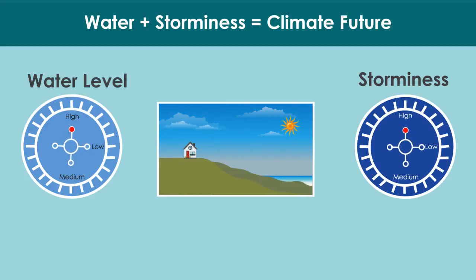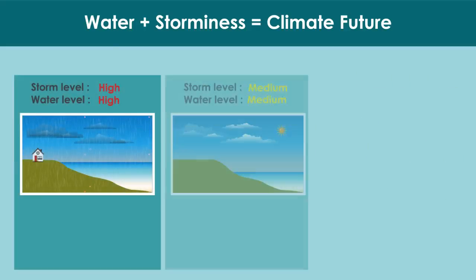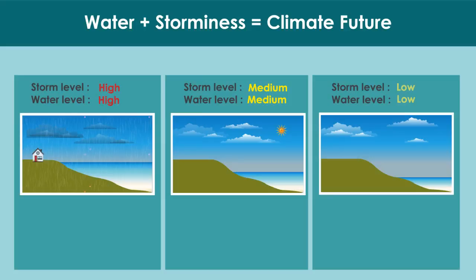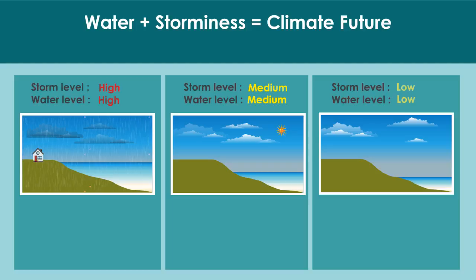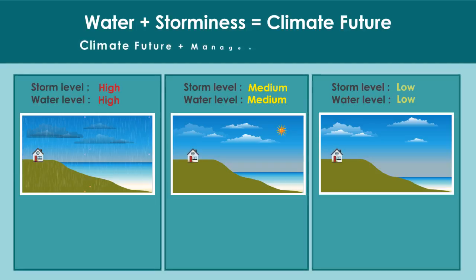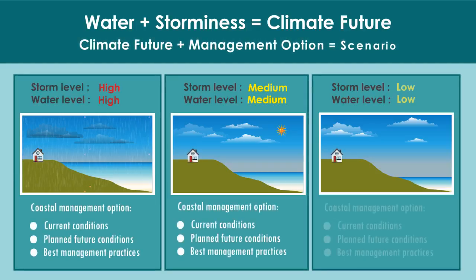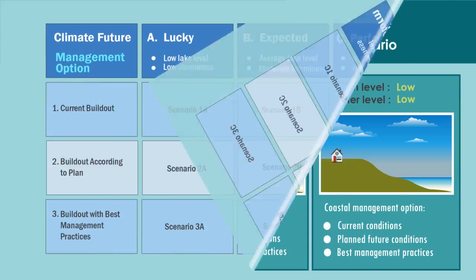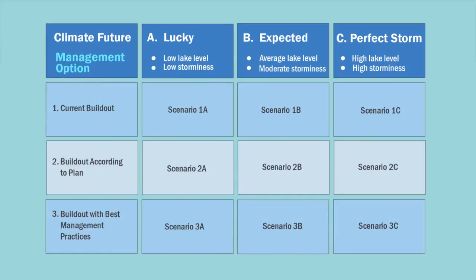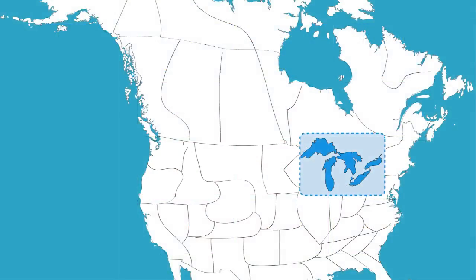A variety of coastal management options are available to help areas at risk. For example, zoning-based setbacks or strategic placement of infrastructure provide possible management options. Each combination of a climate future and set of management options creates a scenario. Scenarios are used to determine the possible benefits and risks to the community from coastal development occurring in high-risk or high-value settings. They can be developed using federal flood maps and geographic information systems available to most communities.